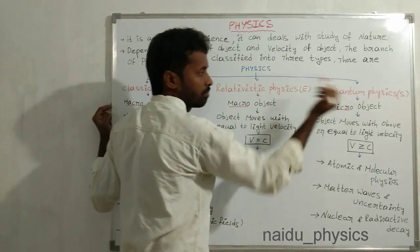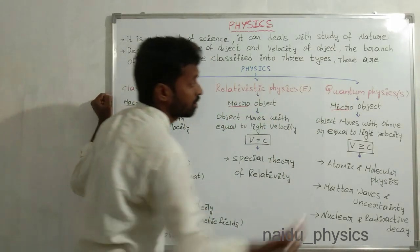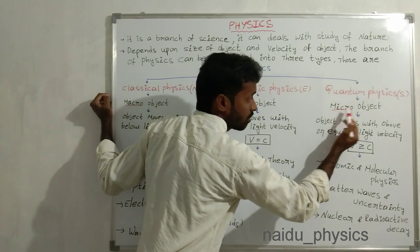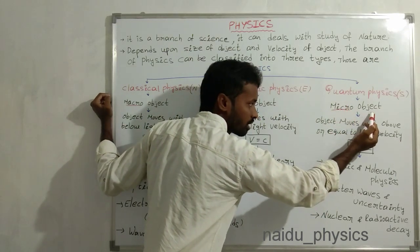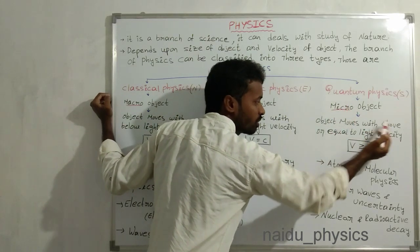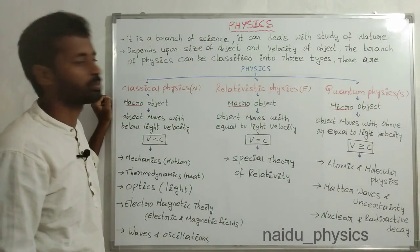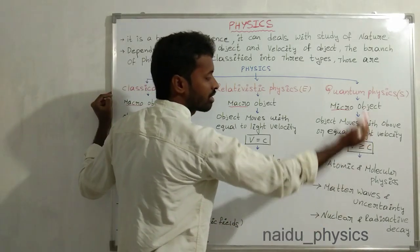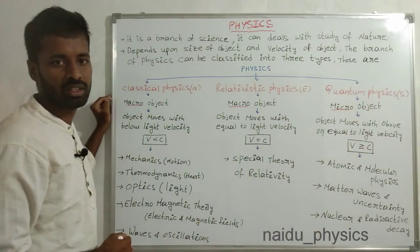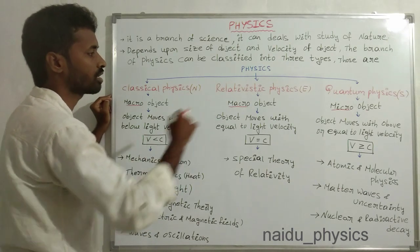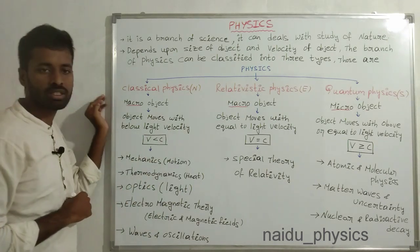Finally, quantum physics. Quantum physics can explain behavior of micro objects, those objects that move with above or equal to light velocity. That's why mathematically it can be represented by V greater than or equal to C. These are the three different types of classifications in our physics.